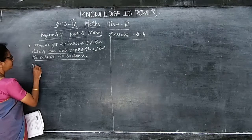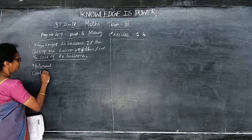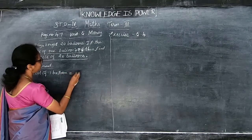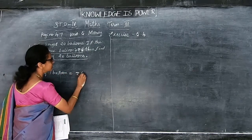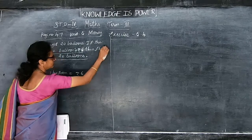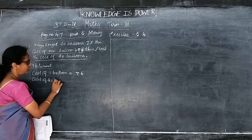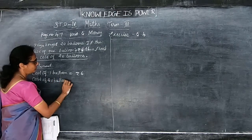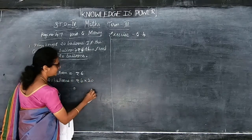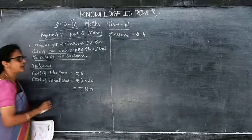How to write the statement: cost of one balloon is equal to rupees 6. We have to find the cost of 20 balloons. So, cost of 20 balloons is equal to rupees 6 into 20. That is equal to 6 into 0 is 0, 6 twos are 12. That is rupees 120 is the answer.